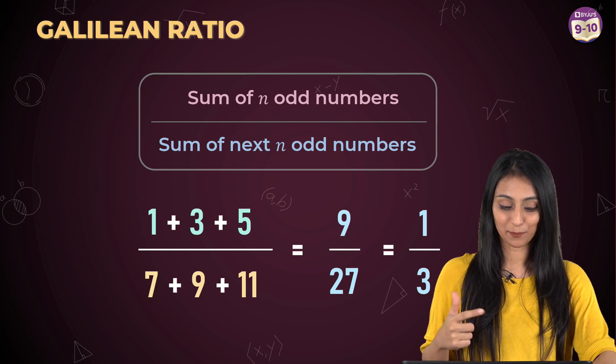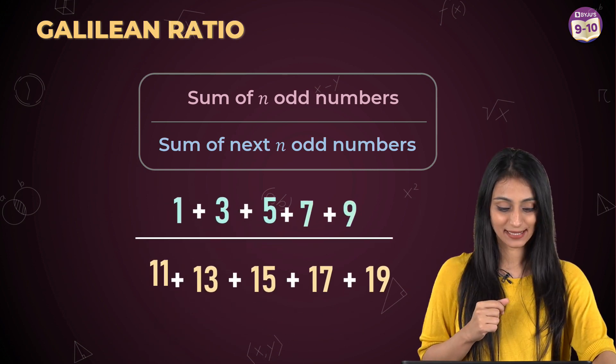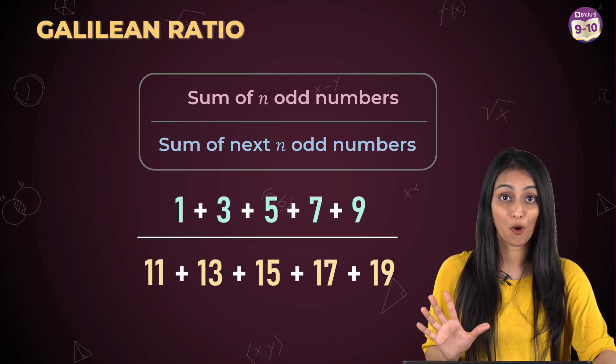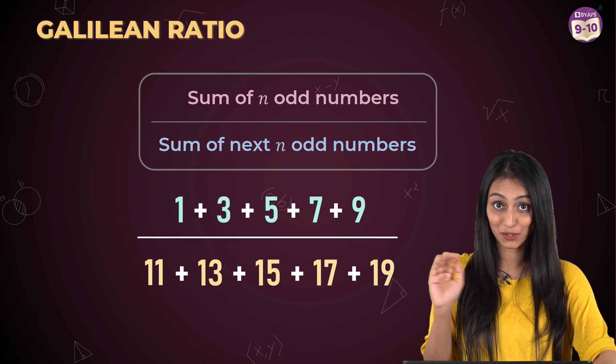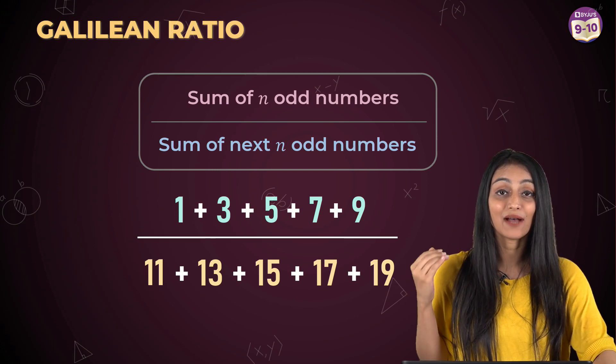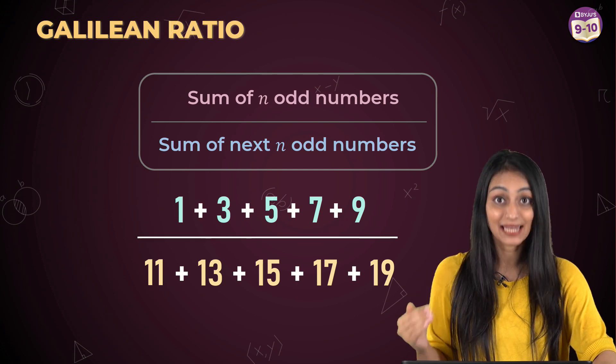Now let's take one more example. Let's increase the odd numbers this time. This time I have taken five odd numbers. 1, 3, 5, 7 and 9 and they are in order. In the denominator, we have 11, 13, 15, 17 and 19.